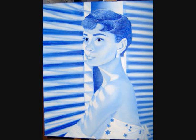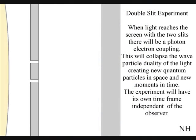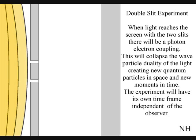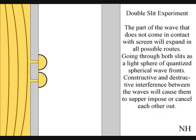The best way to see this happen directly with light is in the two-slit experiment. When the light reaches the screen with the two slits, the photons will react to the electrons of the screen. This will collapse the wave particle reality of the light, creating new quantum particles in space and new moments in time. The part of the wave that does not come in contact with the screen will expand in all possible routes, going through both slits.